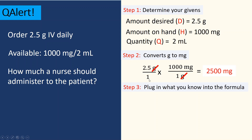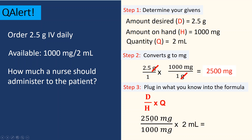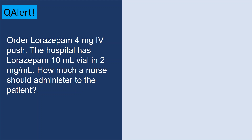Step three: plug into the Desired over Have formula. Desired dose is 2500 milligrams, on hand is 1000 milligrams, and quantity is 2 milliliters. Cancel out milligrams and milligrams, and you get 5 milliliters. So for this order, the nurse would administer 5 milliliters to deliver the 2.5 grams IV dose.